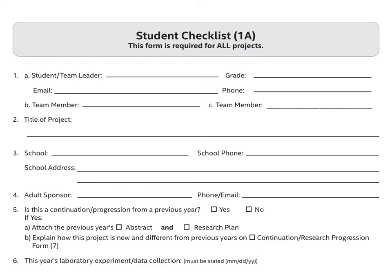Form 1A of the Project Approval Form is the Student Checklist Form. This is the second form that is required for all projects regardless of the field of study. This form asks for basic information about the student, researcher, the project, and the school.